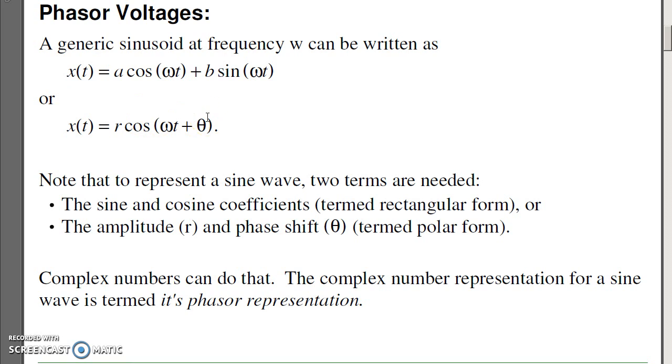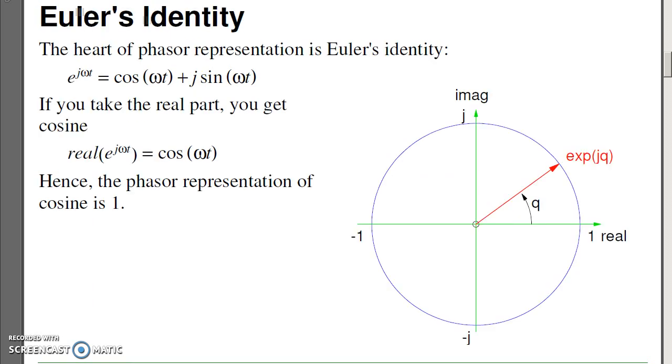The complex number representation of a sine wave is called phasor representation. The heart of complex numbers is Euler's identity. If I have e to the j omega t, that's a vector that spins around the unit circle counterclockwise. The real part maps out cosine, and the complex maps out sine.